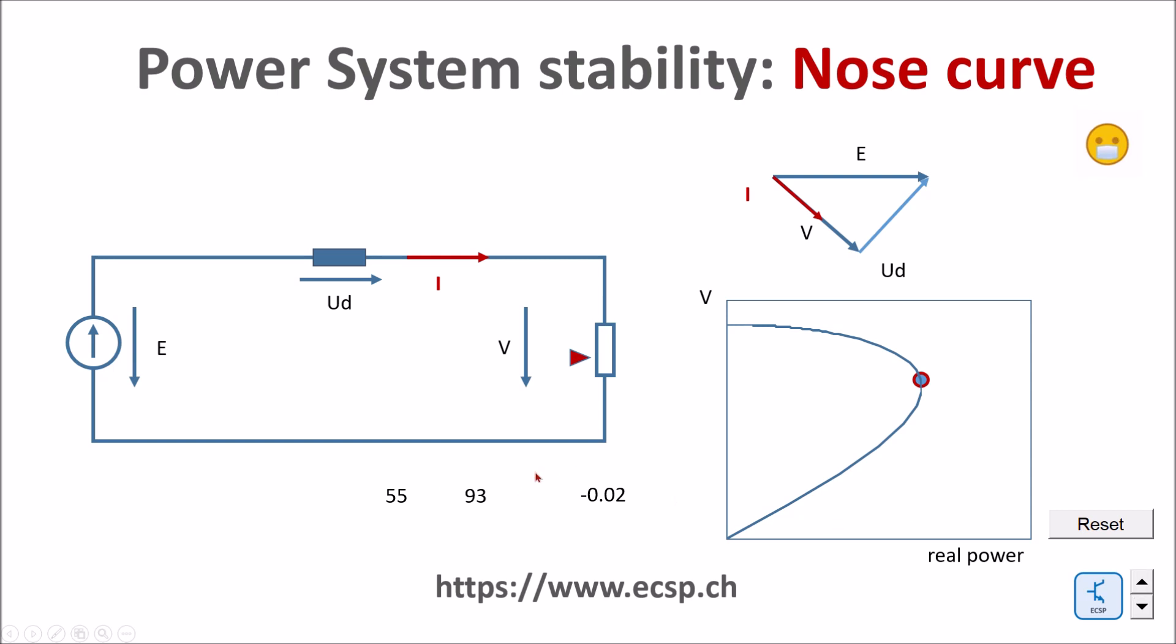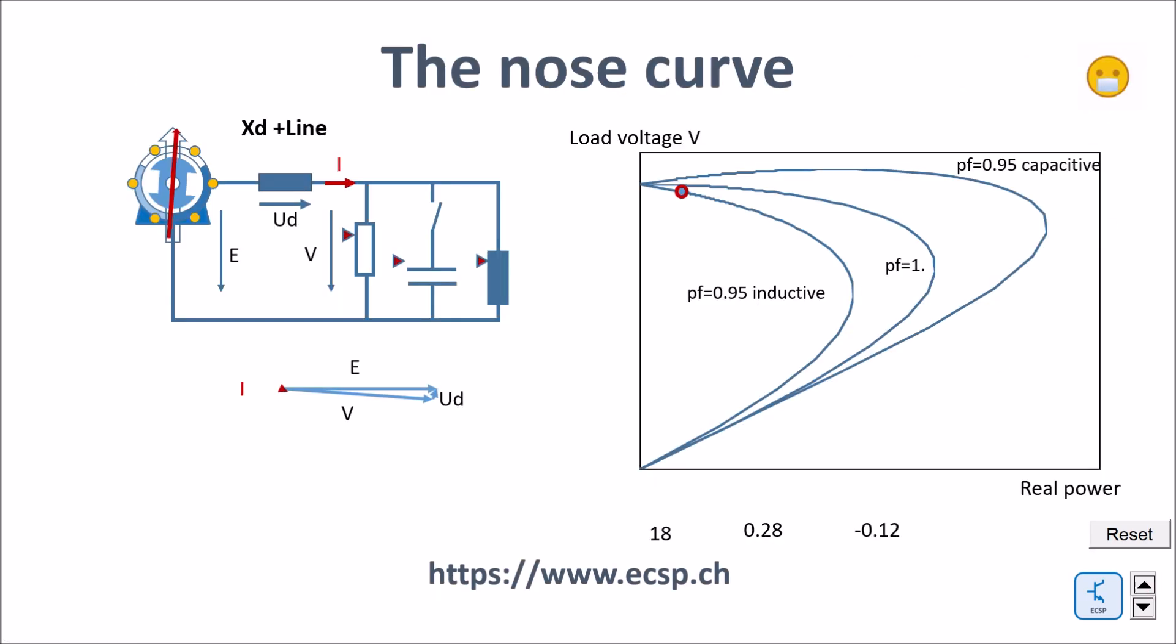The shape of the nose curve strongly depends on the cosine phi of the load. And also this point of no return will change accordingly. Here you can now see how the nose curve depends on the power factor of the load. We have here three cases. This is more an inductive load. And here we have, and you can see as soon as we cross this no return point at the edge of the curve, the voltage collapses, meaning that the generation loses grip.